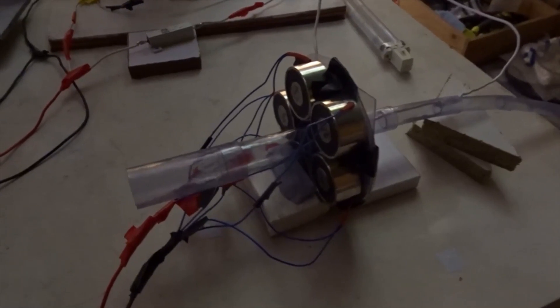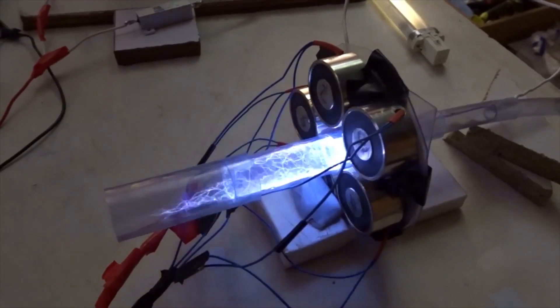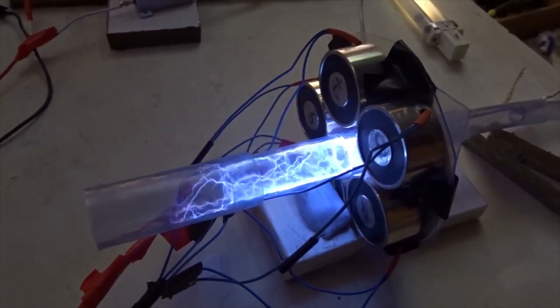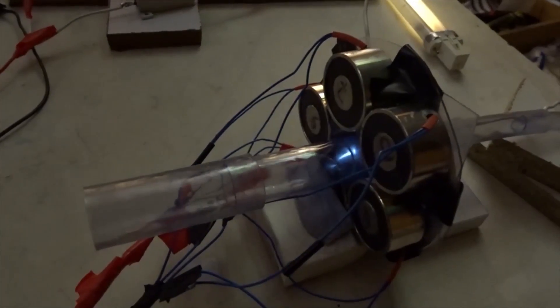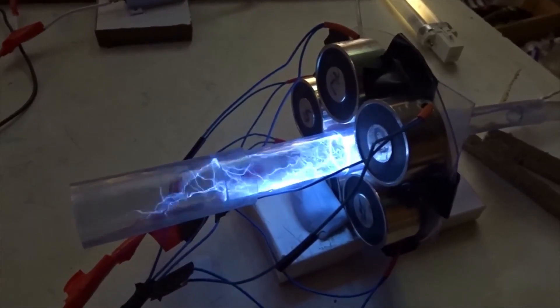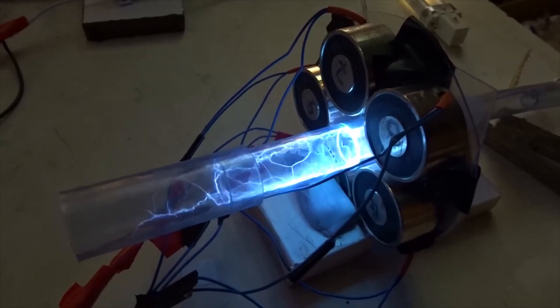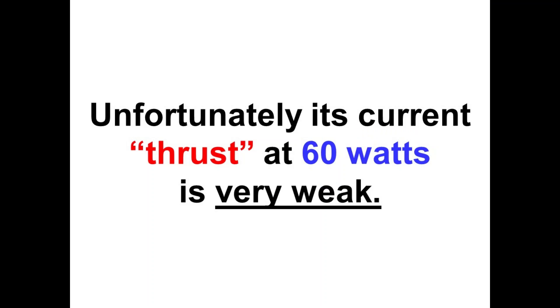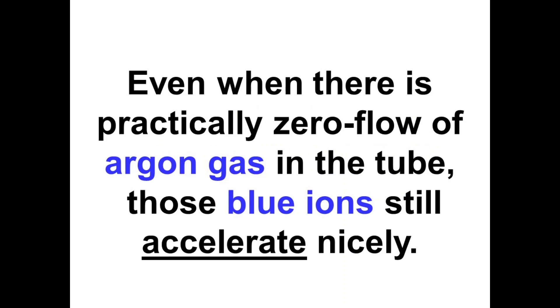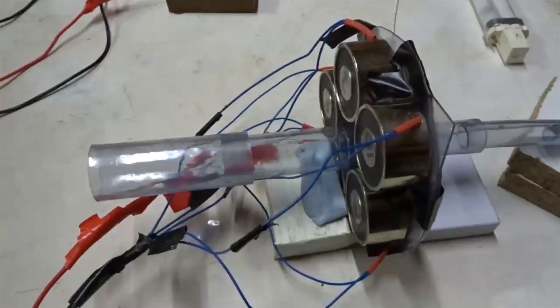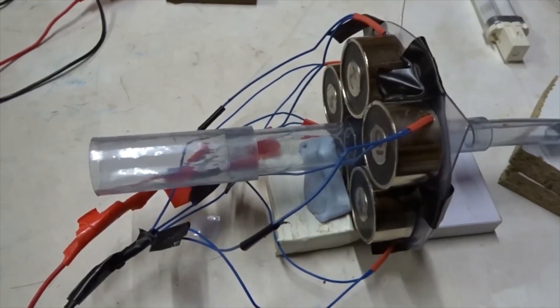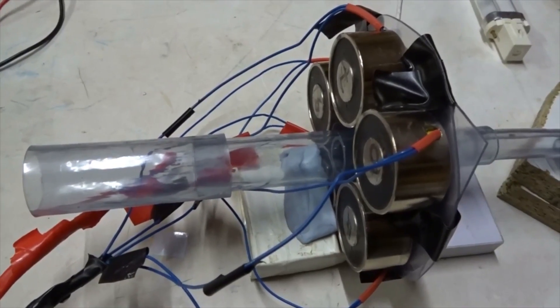When we turn up the power we get very impressive results. That's 60 watts, one amp going through the coil. The ion rocket: even when there's practically zero flow of argon gas through the tube, look how much thrust we get.